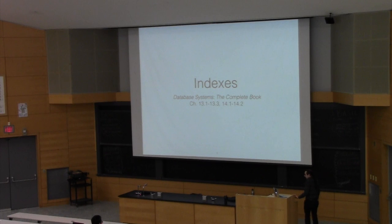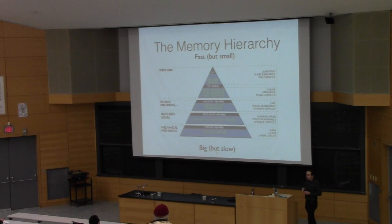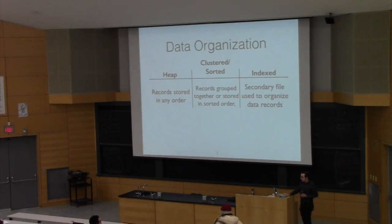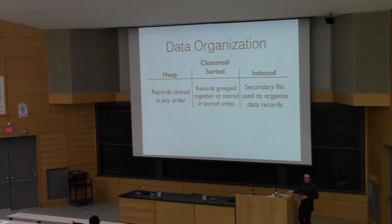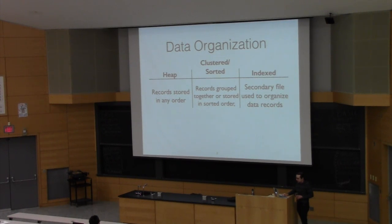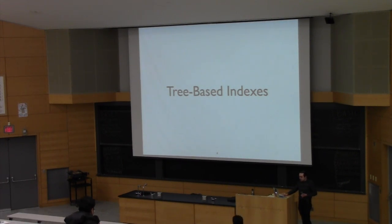Last lecture, we talked about the physical design of a database system — in other words, how do you actually store the data that you're going to try and retrieve later on? We talked about the memory hierarchy and a couple of different strategies for laying out your data: storing them completely unsorted, storing records clustered or organized together, and a third option of storing pointers to where records live. We also started talking about tree-based indexes, and in particular one called the indexed-structured access method.